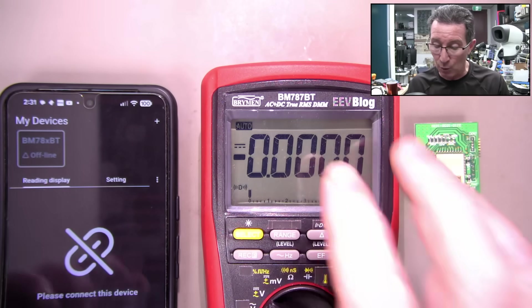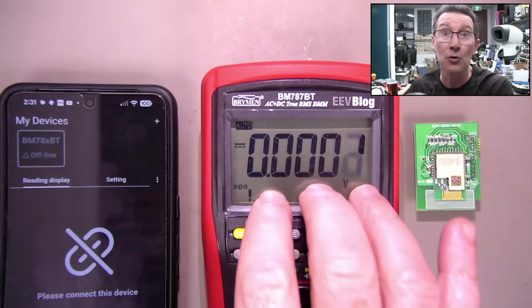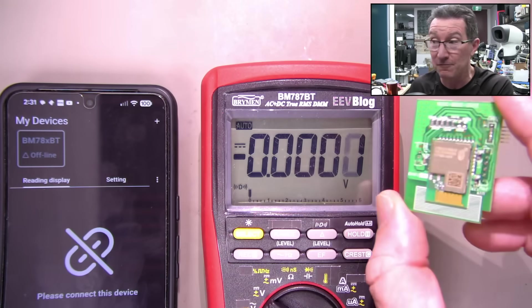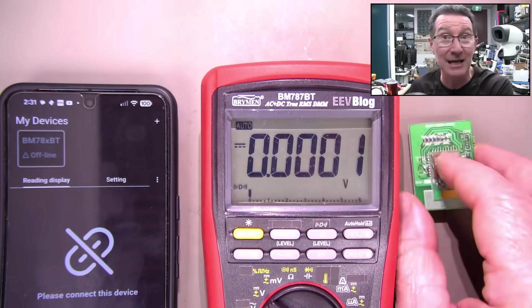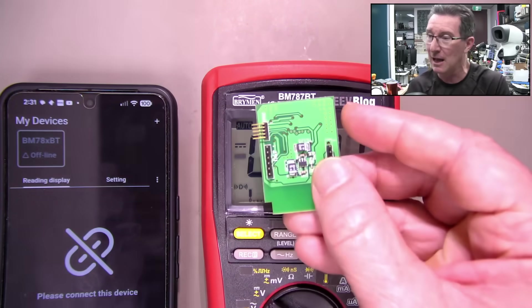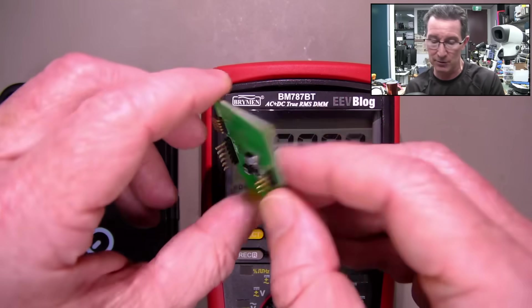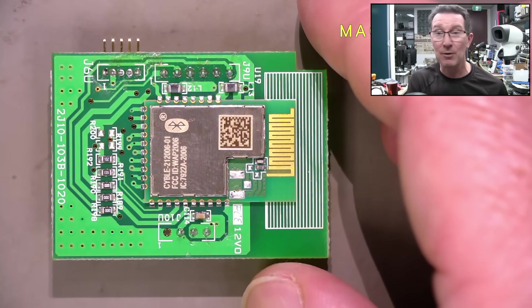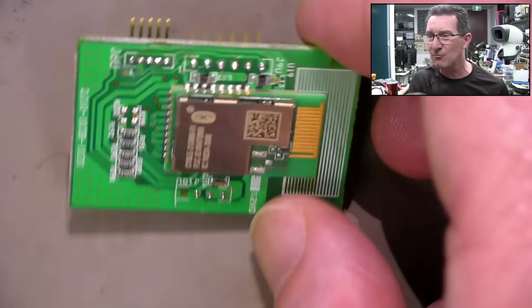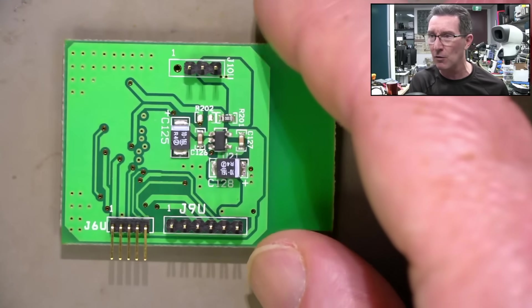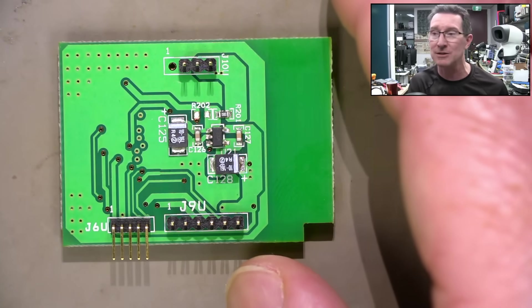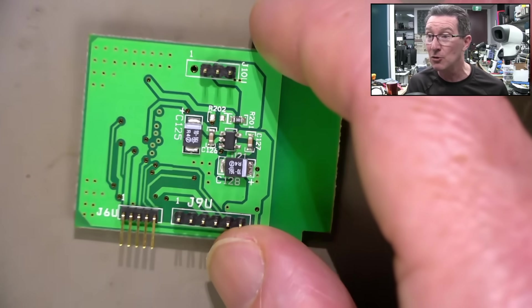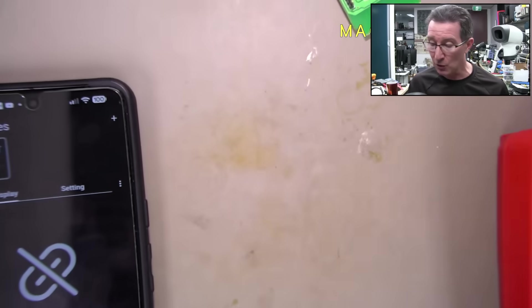I've got version 1.2 in the BLE firmware chip in here. Bryman have sent me a new BLE module. They've sent me this new module, which has been programmed with version 1.3 firmware. You can remote download it over the thing, but that's tricky. So they've just sent me a new module. We're going to install that.